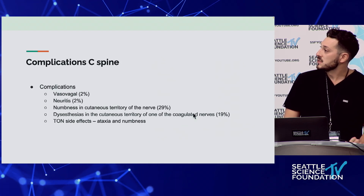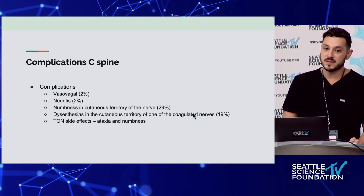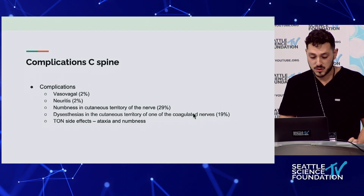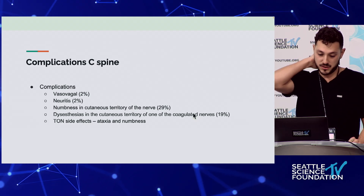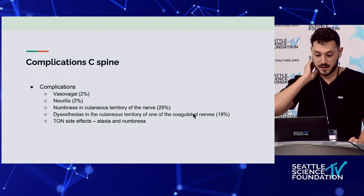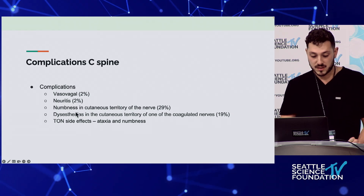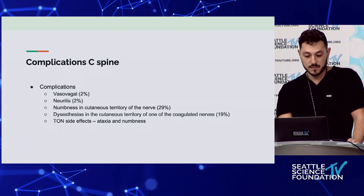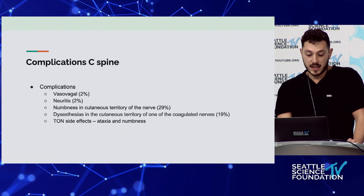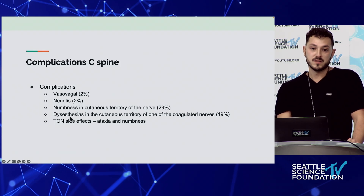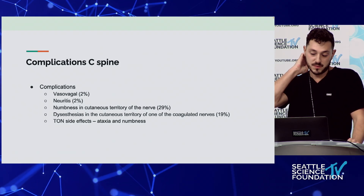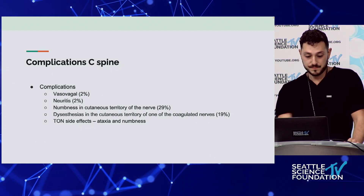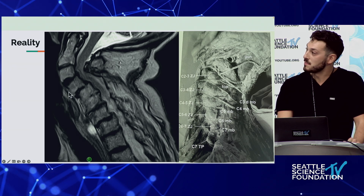Complications for the cervical spine: same as for any procedure, you can get vasovagal reactions. You can get neuritis - not super common, but if you get a little too close to the DRG you can get some post-RFA neuritis. It's common for patients to have cutaneous loss in that section of the neck - sometimes a patient will complain of a sunburn-type sensation. You can get some ataxia and numbness. When doing a third occipital nerve, it's very common for patients to have some vertigo during medial branch blocks, which is normal for a few hours.